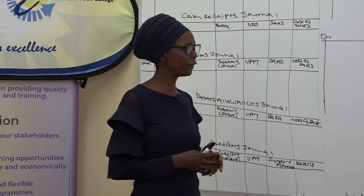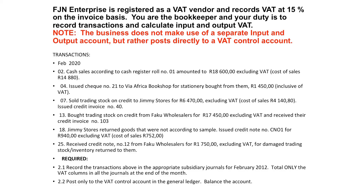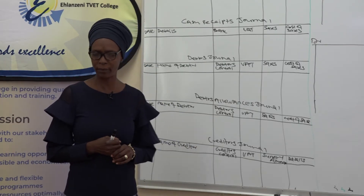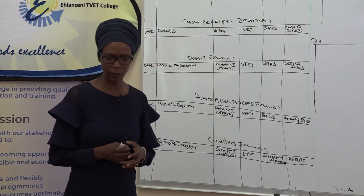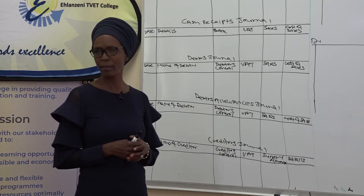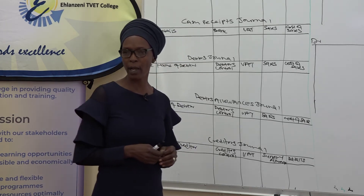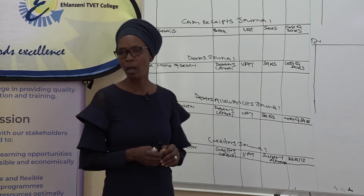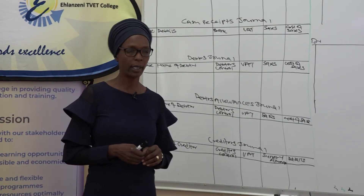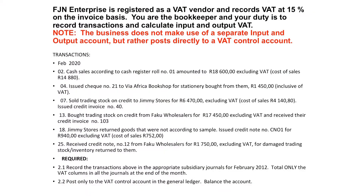Always you are given the VAT percentage, even in your external exam. Then you go to the transaction. For each and every transaction, there is a date. Then you have to check which subsidiary journal to record to. Then check whether the amount is inclusive or exclusive so that you can apply the relevant formula. Remember, we have the inclusive formula of 15 divided by 115, and the exclusive formula of 15 divided by 100.